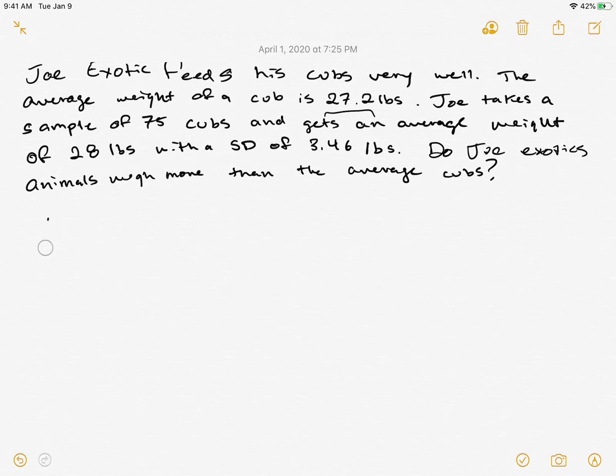The first thing we want to do when we do hypothesis testing is make a null and alternative. Our null hypothesis is going to be that our mean is equal to something. What do we expect to see happen in our null? We expect them to be on average with all the other cubs, so we expect them to be 27.2 pounds. Our alternative is Joe thinks he feeds them well - he's giving them lots of steaks and such. So we're looking in one direction for this test. He wants to see if his animals weigh more than the average cubs, so it's going to be more than 27.2 pounds.